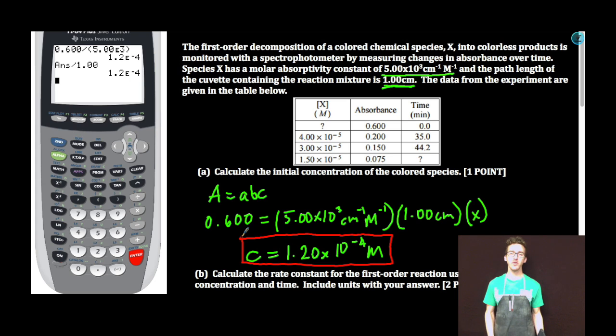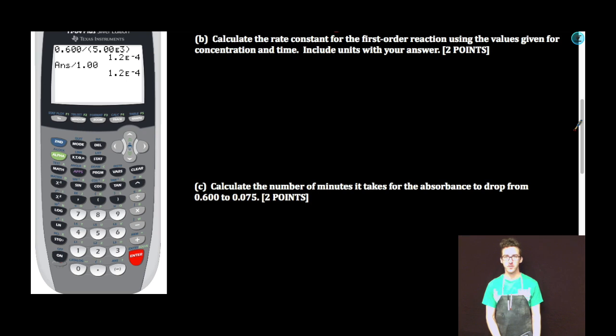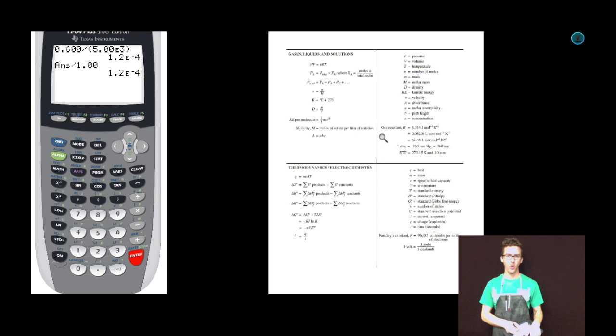Times 10 to the minus 4 molar. Beer's Law for the save. Part B: Calculate the rate constant for the first order reaction using the values given for concentration and time. Include units with your answer. We know that it's a first order reaction, and we're talking about concentration and time. Are you thinking integrated rate law? I'm thinking integrated rate law.